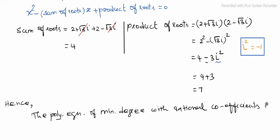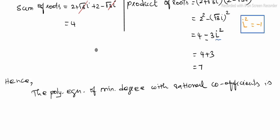See, 4 is rational, 7 is also rational. So: x squared minus sum of roots 4 times x plus product of roots 7 equals zero.